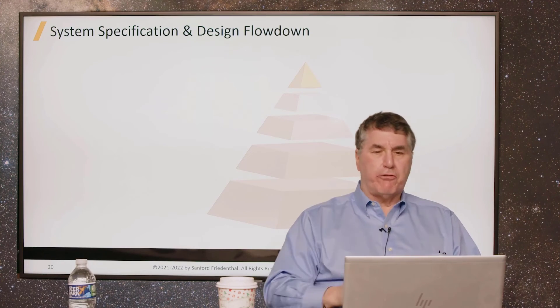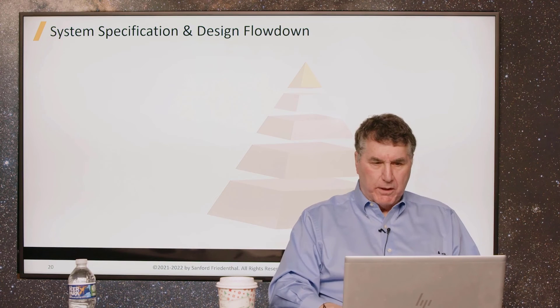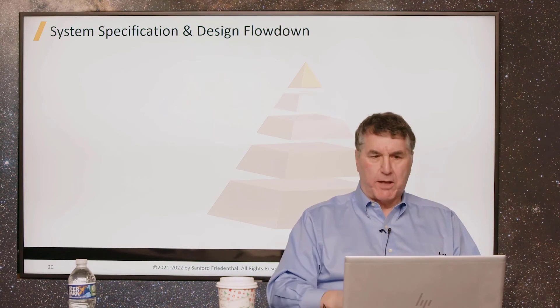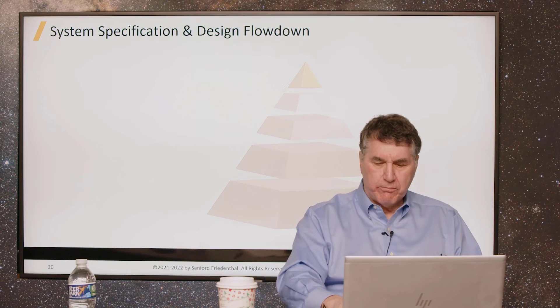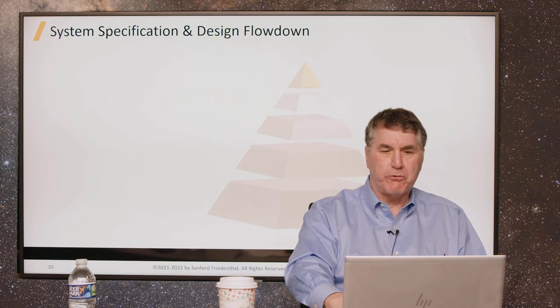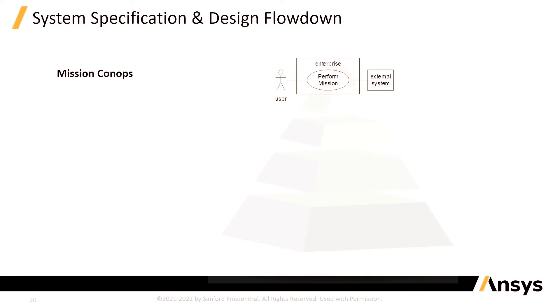So, how do we use that system model? Well, we use it as we talked about up front when we talked about flow down and, for that matter, flow up. And so, in this highly simplified example of system specification and design, what you see are different modeling artifacts that we use as we progress through this flow down process. At the top level, at the mission level, you often start with use cases and talk about what are the goals of the system. And here you see our system and you see the external system and the user. This is this black box view, one of them.